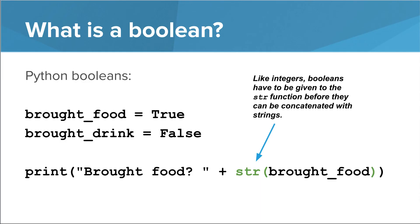You can pass boolean variables to the str function in order to concatenate them with strings, just like you do with integers.